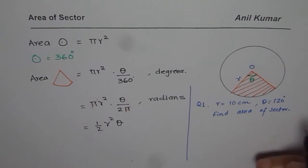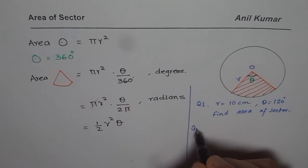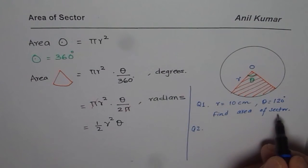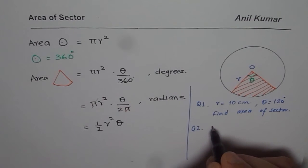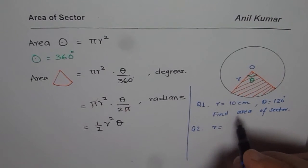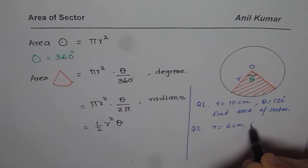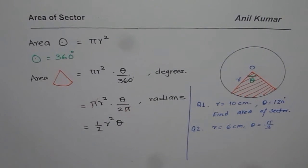That could be one of your questions. In the second question, you need to find the area of the sector. Let's take radius equals 6 centimeters and θ equals π/3. Find the area of the sector for these two cases. That should be a good exercise.